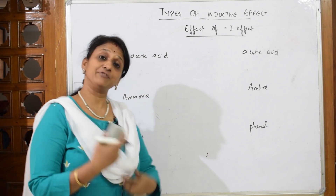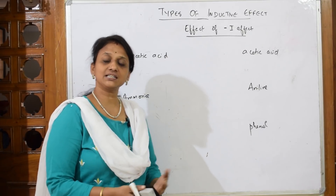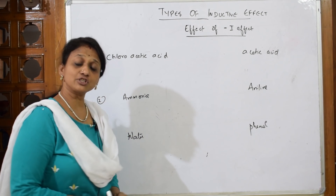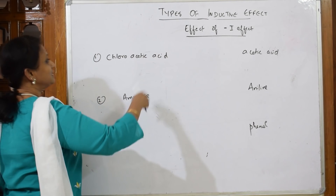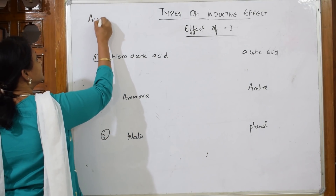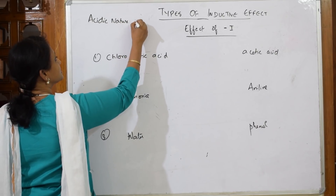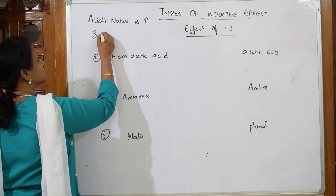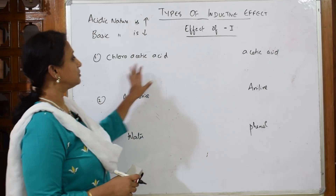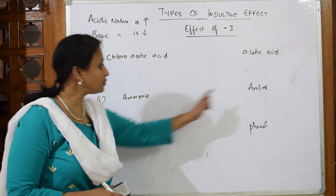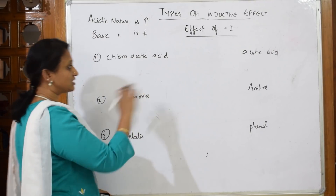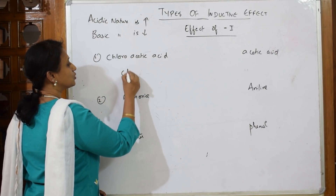Let's see the effects of minus-I effect. Due to minus-I effect, acidic nature is increased and basic nature is decreased. Suppose in an exam paper they give you two acids and ask you to compare acidic nature, or two bases to compare basic nature — this concept is the basis. Chloroacetic acid is given: acetic acid is CH3COOH, and in chloroacetic acid, one hydrogen is replaced by chlorine.